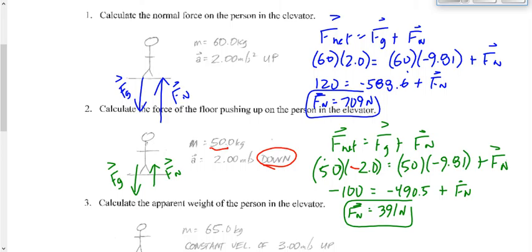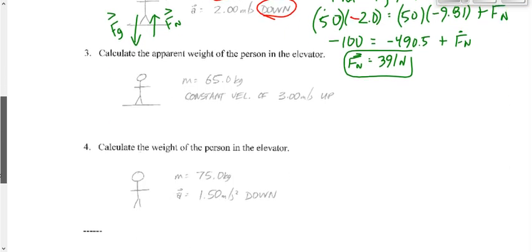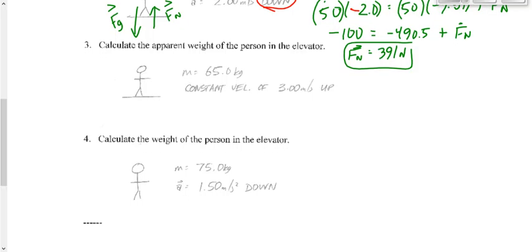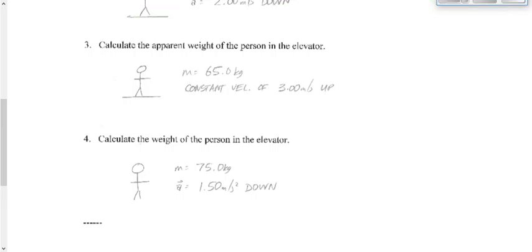Work on questions 3 and 4 on the worksheet. Question 3 is similar to what we've done. For question 4, do not try to overanalyze it — don't make it harder than it has to be. Question 3 says calculate the apparent weight of the person in the elevator. What are we really looking for when asked for apparent weight? Normal force.